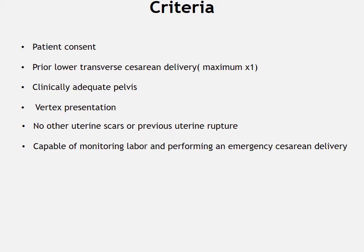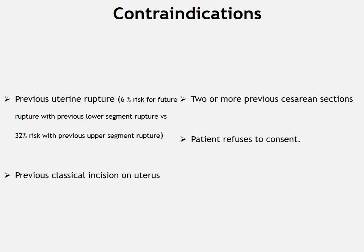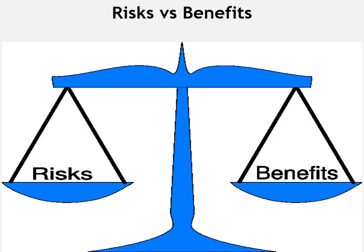There are few absolute contraindications to vaginal birth after cesarean section. Previous uterine rupture carries a 6% risk of future rupture with a prior lower segment rupture versus 32% with a prior upper segment rupture. Other contraindications include previous classical incision on the uterus, two or more previous cesarean sections, and patient refusal to consent. It is important to weigh the risks versus benefits and individualize for each patient.